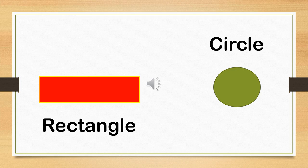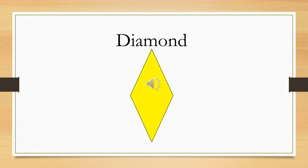So the four basic shapes we have done are square, triangle, rectangle, and circle. Now the next shape to do is a diamond. Can we all say diamond?